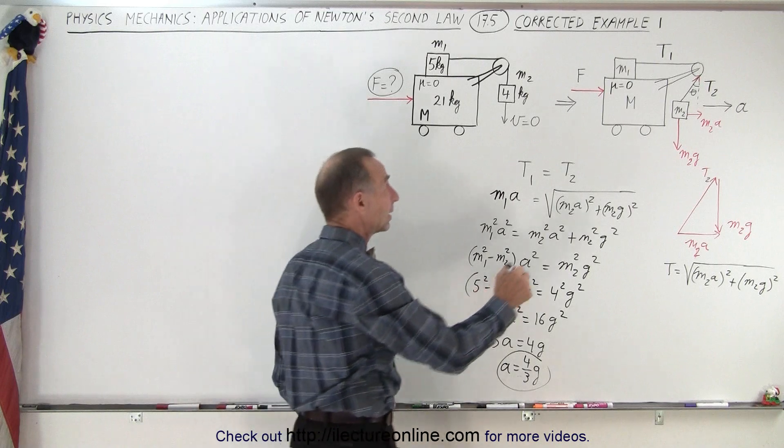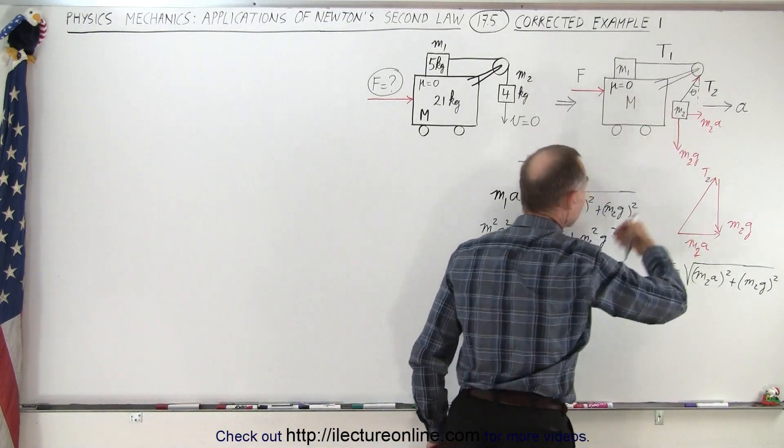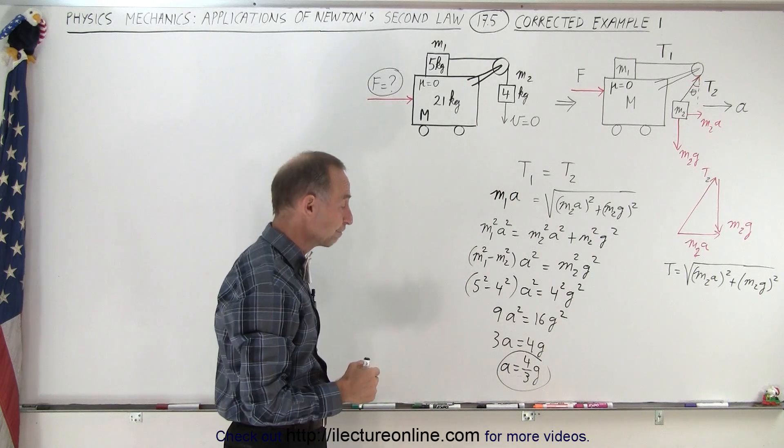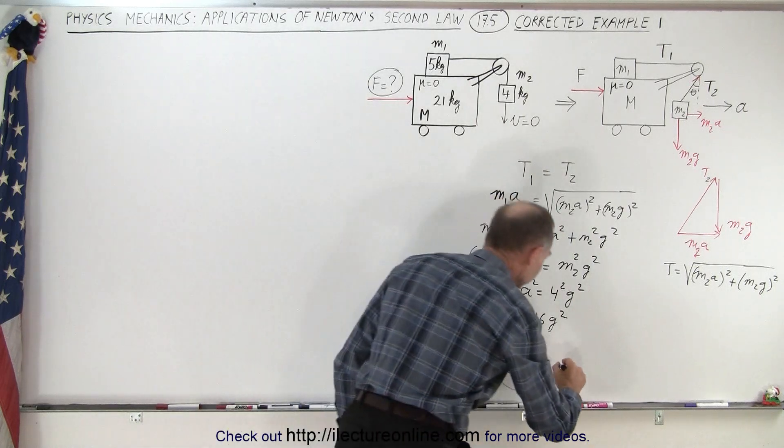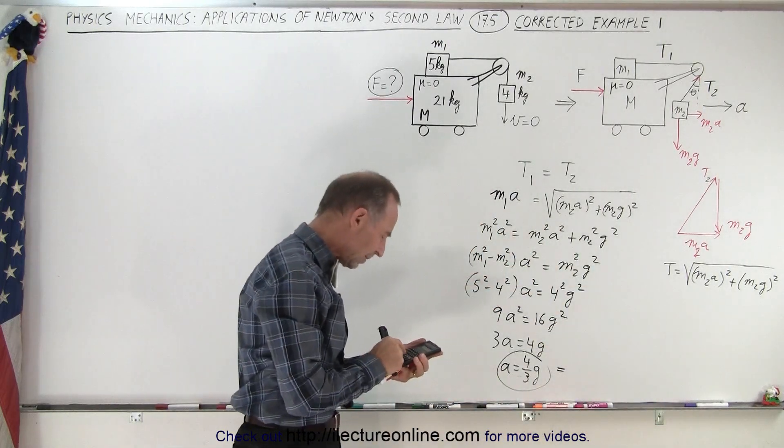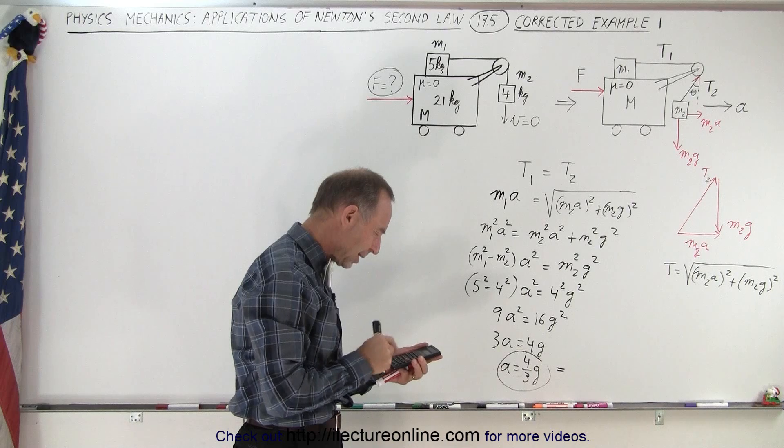So the answer is, in order for this mass not to be coming down, the acceleration must be greater than g, otherwise it won't work. Let's see what that's equal to, now we need a calculator of course.